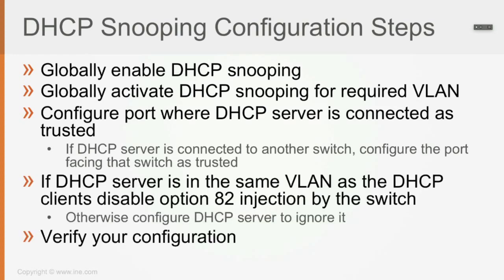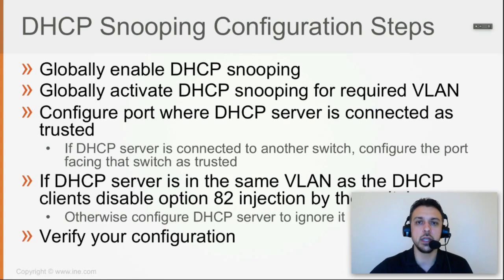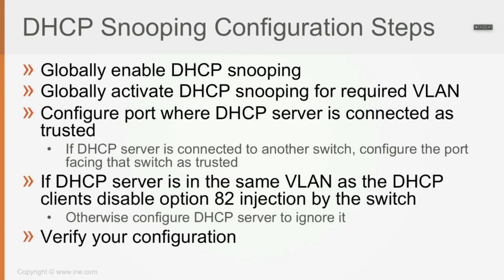By default, the switch is not going to allow any inbound DHCP server reply messages on untrusted ports — it's going to drop those. Now if the DHCP server is in the same VLAN as the DHCP clients, then you have to go on the switch and disable option 82 injection, otherwise the configured DHCP server is going to ignore it and not issue any addresses at all.